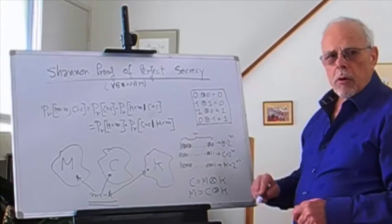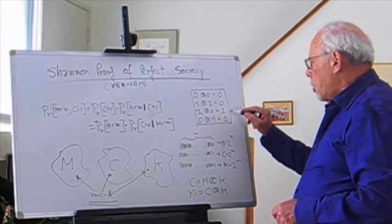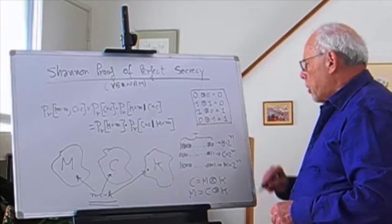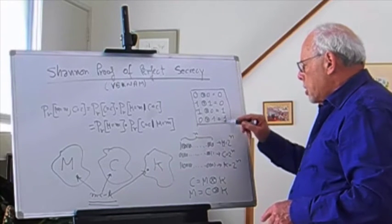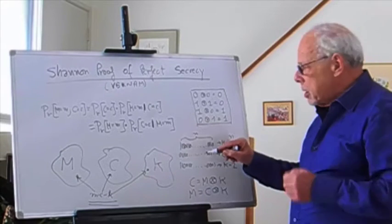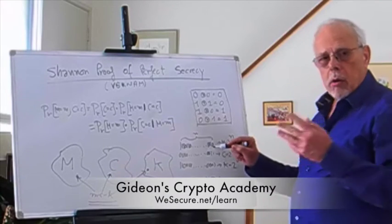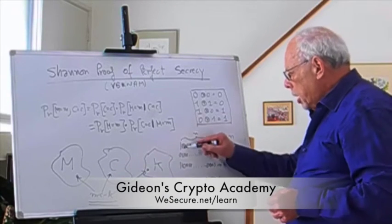You use this to take any message—any combination of bits which is the message—with another combination of bits which we call the key.